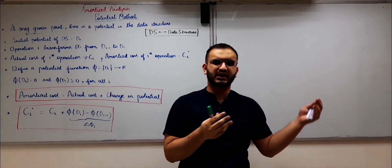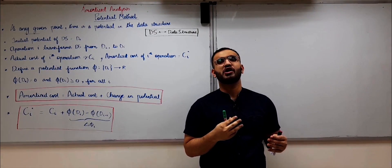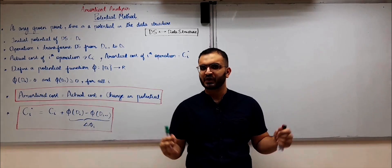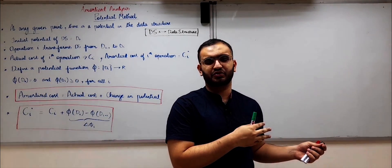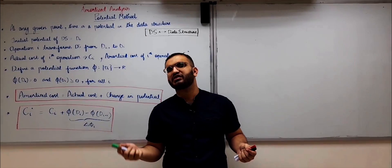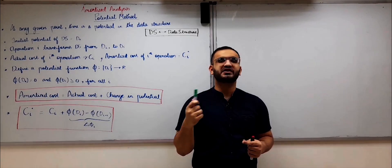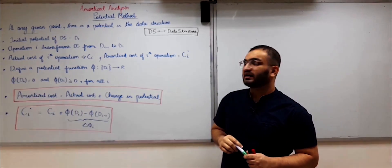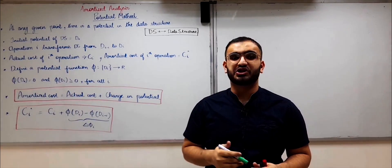In the same way, there are other data structures for which one of these three methods can be used in a much better way than the other two. There is another method known as the charging method but it is not used much. There are some examples like dynamic tables, which we saw in the last two videos, that can be used with all three methods. Even in this video, at the end, I'll derive the time complexity of dynamic tables with the potential method as well.